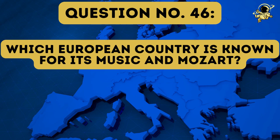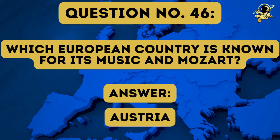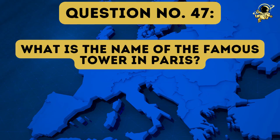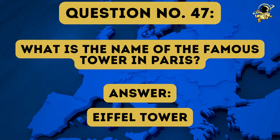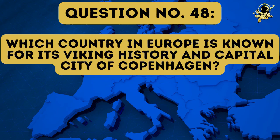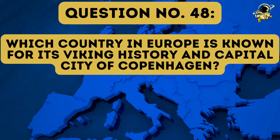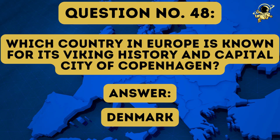Question number forty-six: Which European country is known for its music and Mozart? And the answer to question number forty-six is Austria. Question number forty-seven: What is the name of the famous tower in Paris? And the answer to question number forty-seven is the Eiffel Tower. Question number forty-eight: Which country in Europe is known for its Viking history and capital city of Copenhagen? I can just give you one hint — it is not Norway. And the answer to question number forty-eight is Denmark.